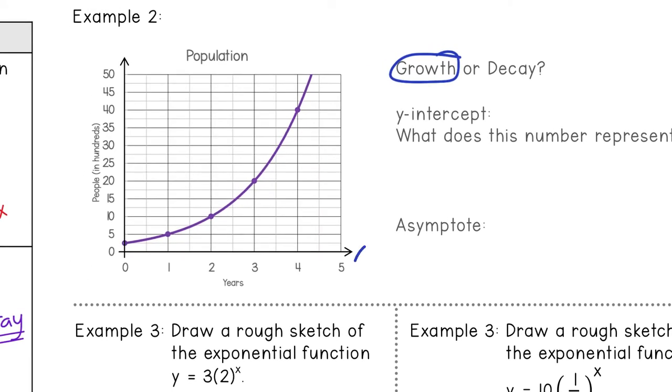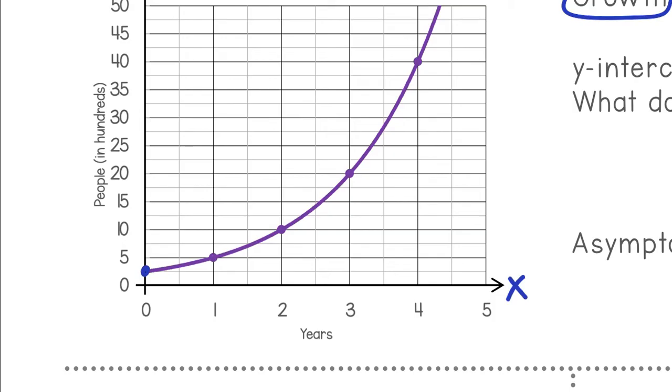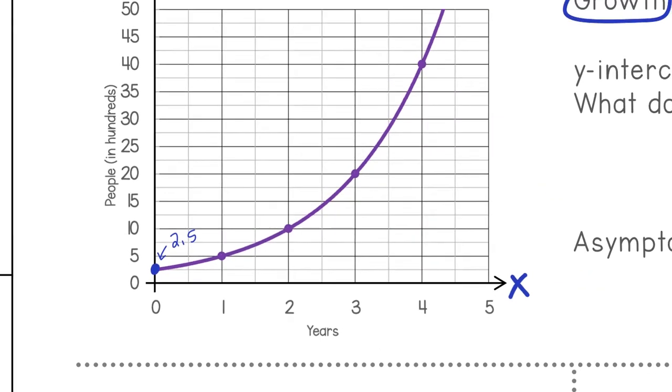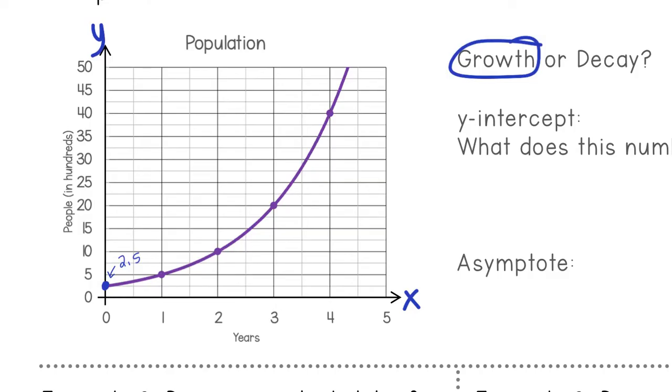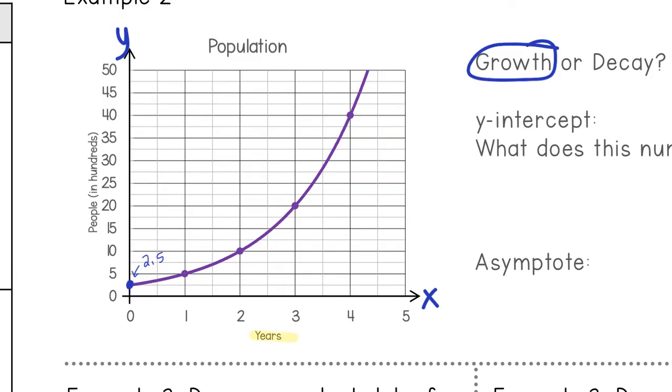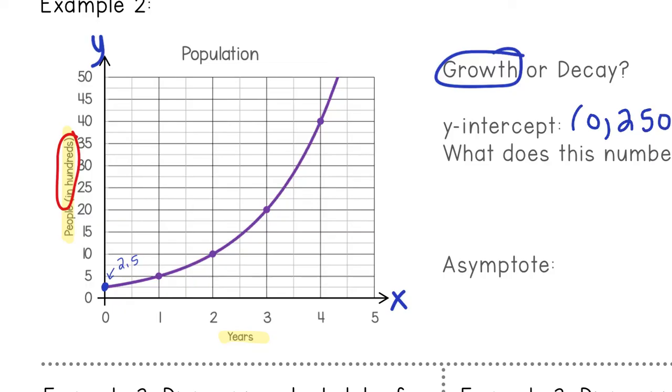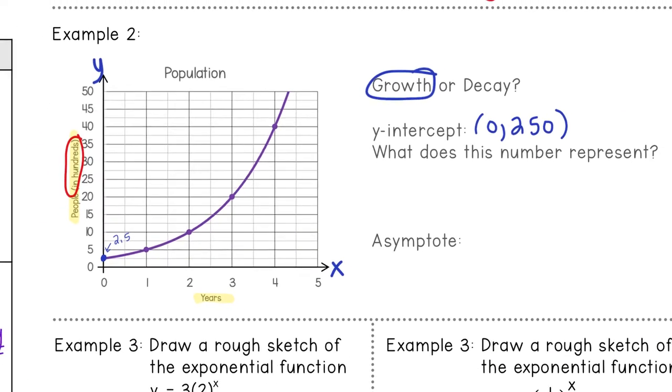Then we want our y-intercept. We know that horizontal is x, vertical is y. So it is hitting right here. So it looks like it's labeled by fives, but this is exactly in the middle of five. So that would be 2.5, because that's half of five. But we have to be careful when we write this down, because if we are reading our graph the way we should, this has to do with population. The bottom represents years. The side, our y-value is people in hundreds. So that's the important part that I want you guys to look at, that it's in hundreds. So 2.5 hundred is a way of saying 250.